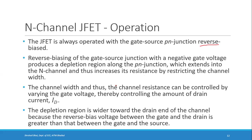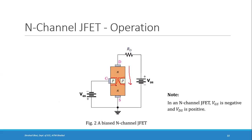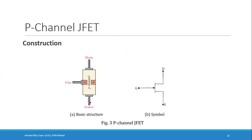So that covers the construction and operation of an N-channel JFET. The key points are: there is an N-type channel with drain current ID flowing through it, controlled by the gate-to-source voltage VGS which is negative for N-channel JFET. This reverse-biased junction causes a depletion region that changes the channel resistance, thereby controlling the current.